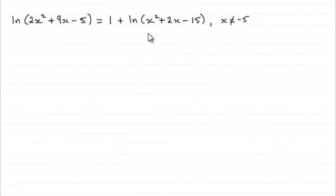Okay, we're given this equation to solve where x doesn't equal -5. It doesn't equal -5 because if you were to substitute -5 into here or here, you'd end up with taking the natural log of 0. And the natural log of 0 doesn't exist - you'd get an error on your calculator. It's an undefined result. So that's the reason why x doesn't equal -5.